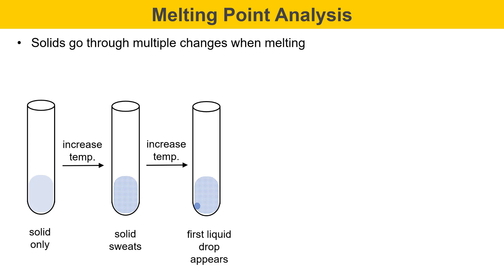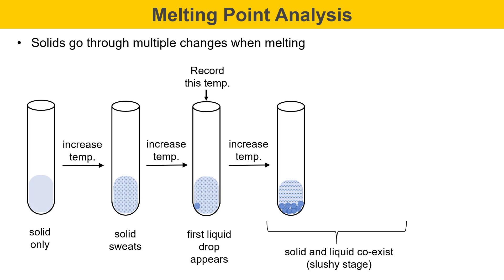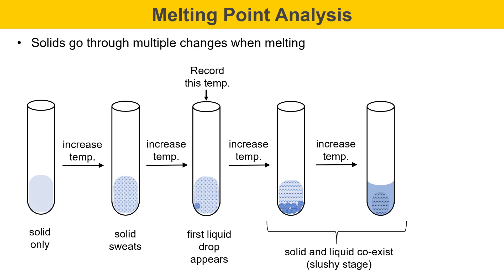You should record this temperature as the first temperature of the melting point range. Then, as temperature is increased, you get to a point where the solid and liquid coexist in a slushy stage. At one point, there might be multiple drops of liquid, or the solid might be sitting in a little puddle of liquid. As the temperature is increased further, the remaining solid is completely immersed in liquid.